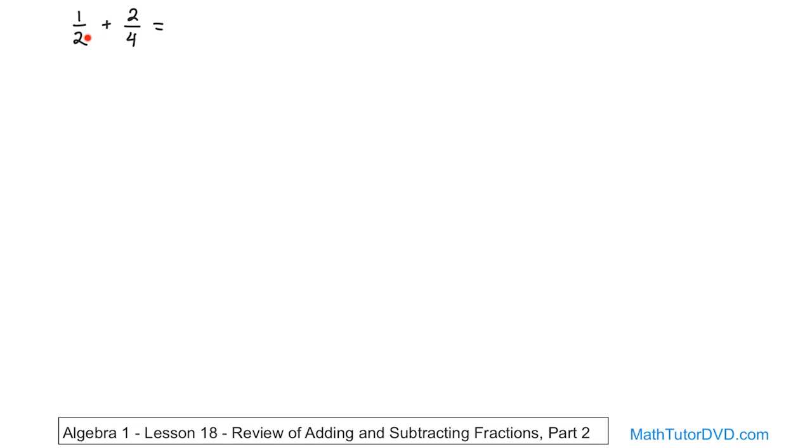So the question is, how do I multiply this fraction, top and bottom, so that the bottom will be four? Because I want it to match with this. That's the easiest way to handle it, right? If I multiply top and bottom by two, let's see what we get.